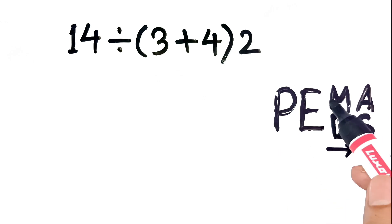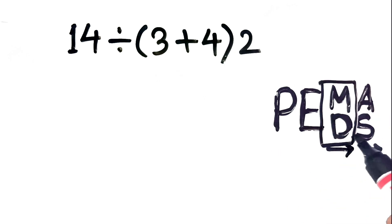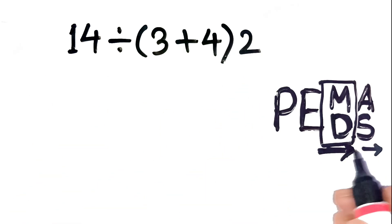And here's the tricky part. Multiplication and division are on the same level. You always handle them left to right in the order they appear. All right, let's break it down.